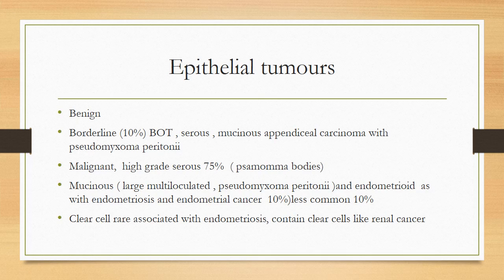Epithelial tumors can be benign, borderline, or malignant. Borderline tumors account for 10% and could be serous or mucinous, with appendiceal carcinomas, and can present with pseudomyxoma peritonii. They have some features of malignancy — nuclear pleomorphism and aneuploidy — but the cells did not invade the basement membrane. They can spread to the omentum and surrounding pelvic and abdominal structures but do not recur usually.